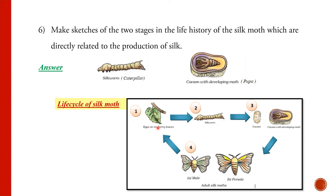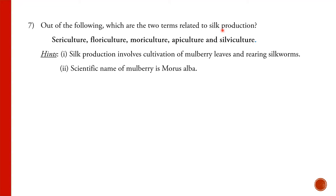In the life cycle of a silk moth, it first lays eggs on mulberry leaves. After some days the eggs hatch and the caterpillar, larva, or silkworm comes out. This caterpillar feeds on mulberry leaves and becomes huge in size. After some days it stops eating and enters the pupa stage, covering itself in a cocoon, where it develops and finally comes out as an adult silk moth.